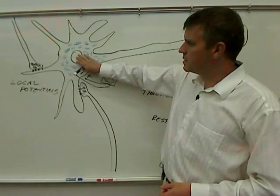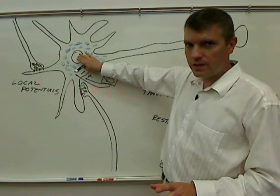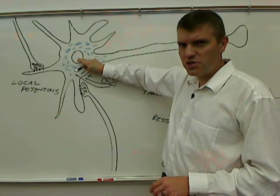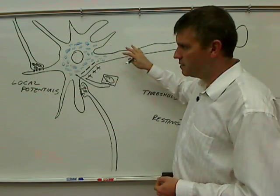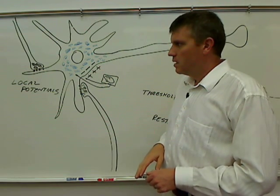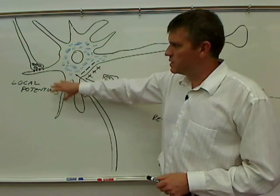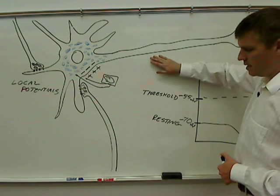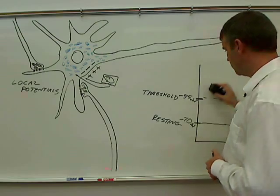The nucleus, of course, is here in the center, and it has the same function that the nuclei have in other cells. It contains all the information needed to make all the proteins needed to help the cell function. The dendrites we talked about, we talked about local potentials. Let's go to the axon and talk about what's happening at the axon.